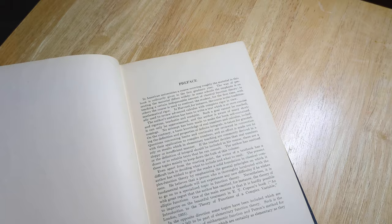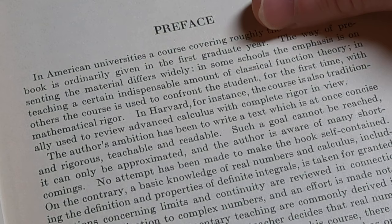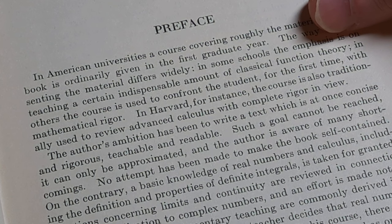Let's see what it says here. In American universities, a course covering roughly the material in this book is ordinarily given in the first graduate year. The way of presenting the material differs widely. In some schools the emphasis is on teaching a certain indispensable amount of classical function theory. In others, to confront the student for the first time with mathematical rigor.